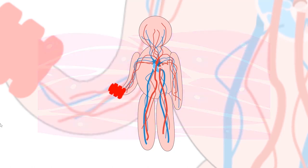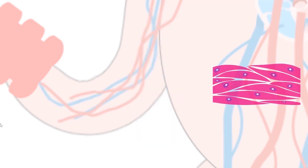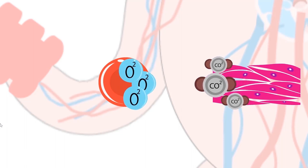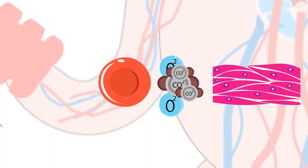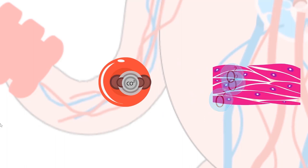This waste product will later on be carried by blood for disposal through exhalation. Oxygen-rich blood replenishes the oxygen lost by the muscle cells during cellular respiration in exchange for the cell's waste product, carbon dioxide. This exchange of gases fuels the continuous process of cellular respiration inside the cell.